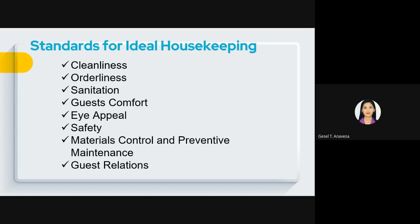Fifth, eye appeal — the ambience should be soothing to the eyes, not dim or dull. There should be suitable interior design and proper blending of colors, with wall decors and notices posted at eye level. Sixth, safety — rooms, function rooms, and public areas must be free from hazards like open electrical outlets and dangling wires. If such conditions exist, guests will check out and not return to your hotel.